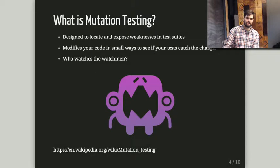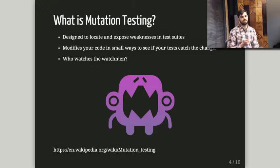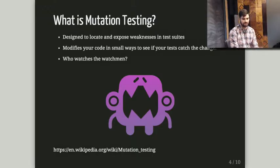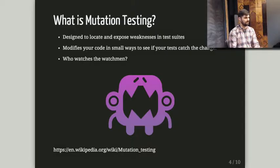Mutation testing exists because it's designed to expose weaknesses in your test suite. We are writing tests to expose weaknesses in our code, but who is watching our tests? Maybe our tests aren't that great. In mutation testing, they have this phrase of "who watches the watchman." So your mutation testing approach is watching your tests that are watching your code. The idea is that it takes your existing test suite, runs it against your code, then starts modifying your underlying code in all kinds of ways, re-running your test suite to see what modifications are actually caught and which ones are not.